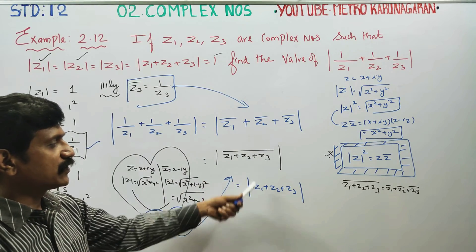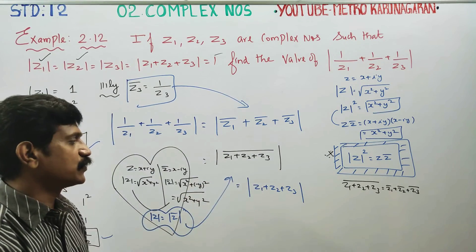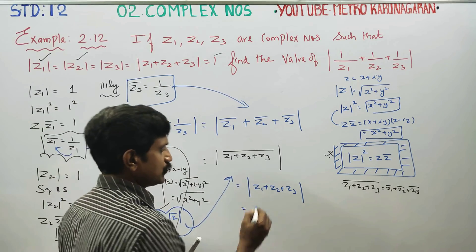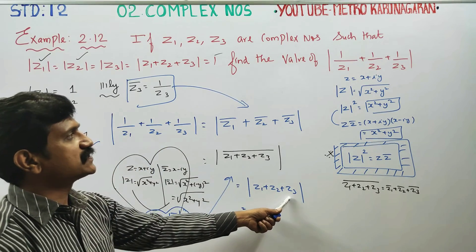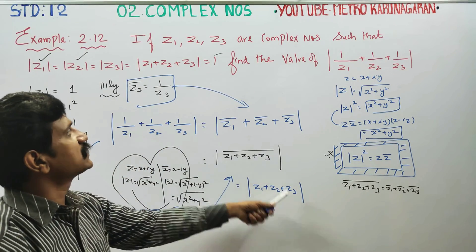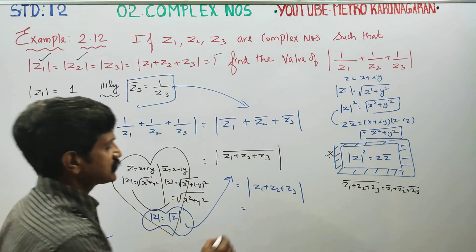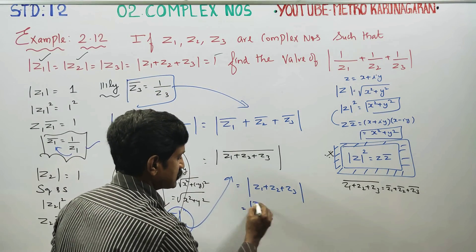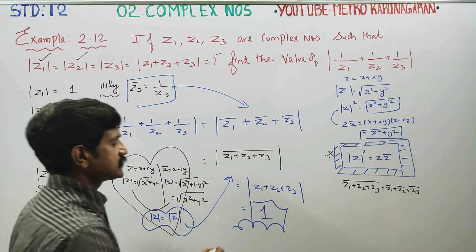Using all the properties, Z1 plus Z2 plus Z3 conjugate equals 1. Therefore, your final answer is 1.